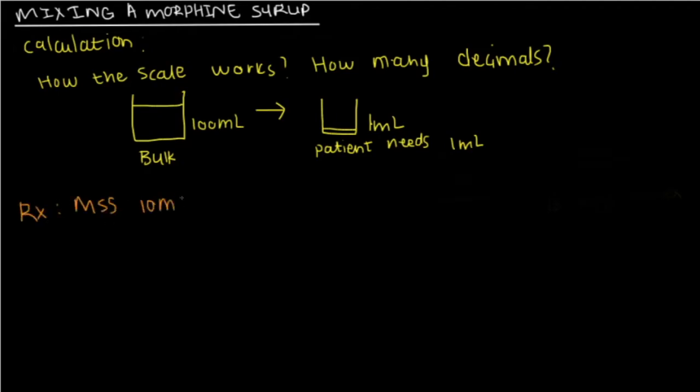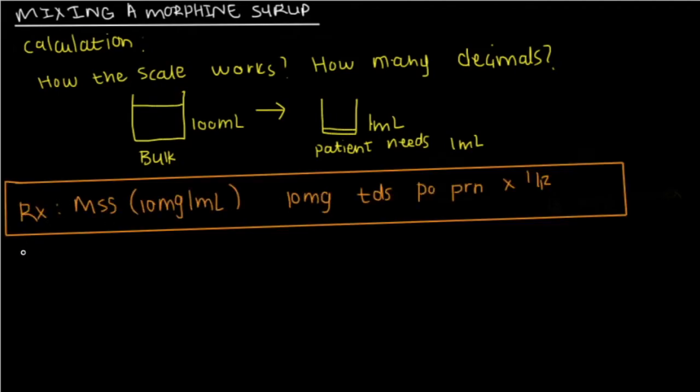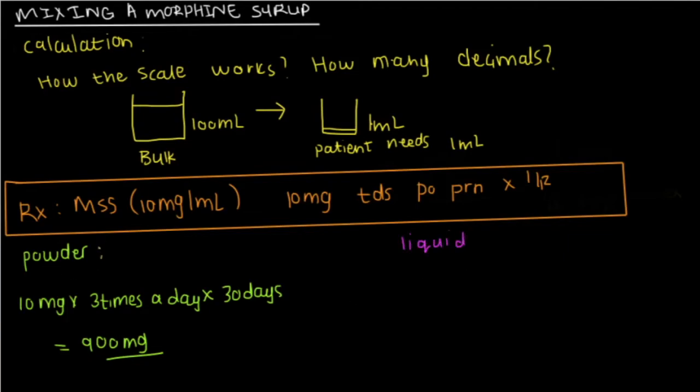Alright, so to calculate the powder. Now, remember, we are using the data from our example prescription. So, to calculate the powder, you're going to need 10 mg times 3 times a day times 30 days. Which equals 900 mg. And to determine the liquid, you're going to do a cross-multiplication. So, we're going to say 900 mg divided by 10 mg times 1. And it's going to give you 90 ml.